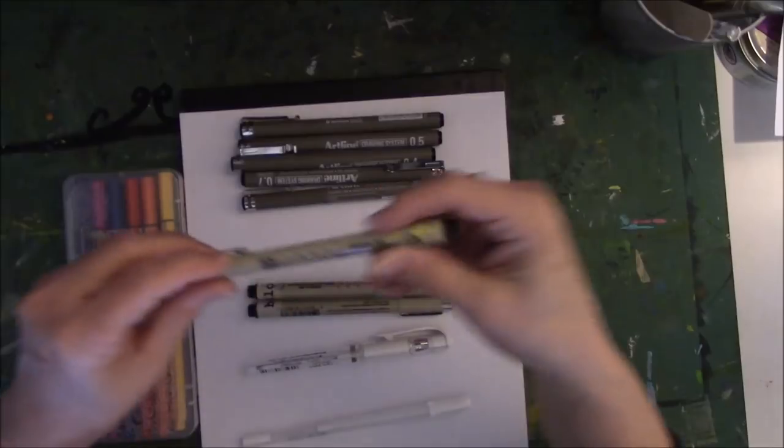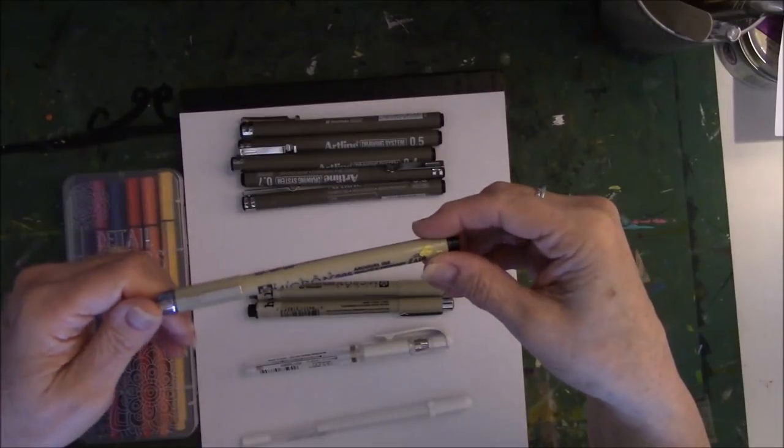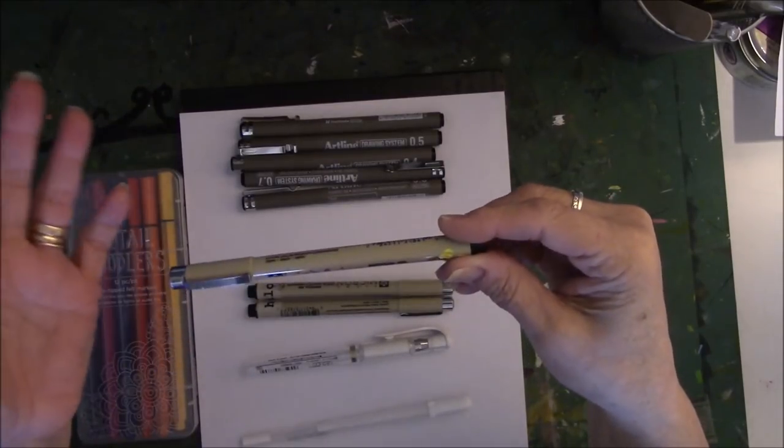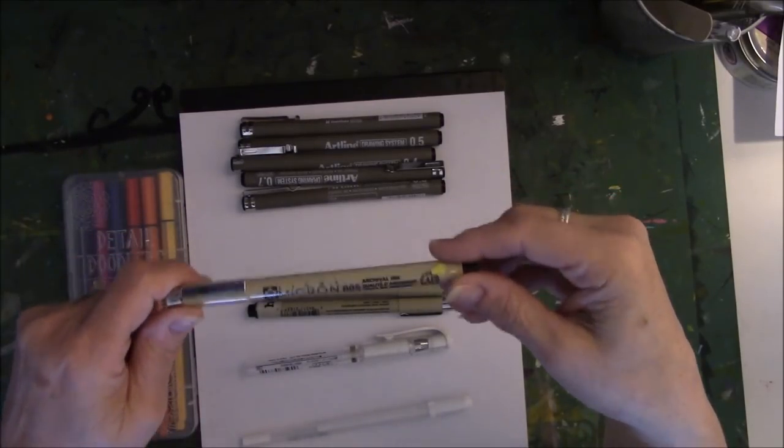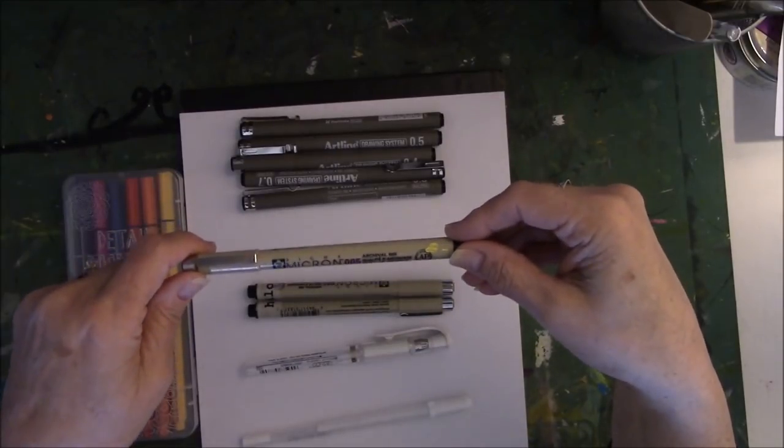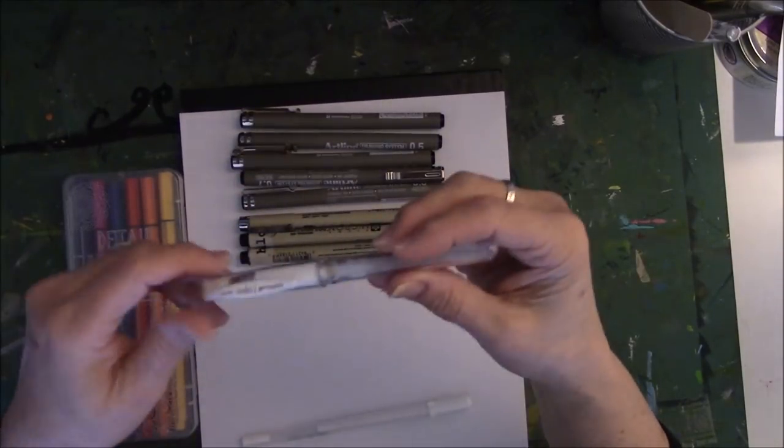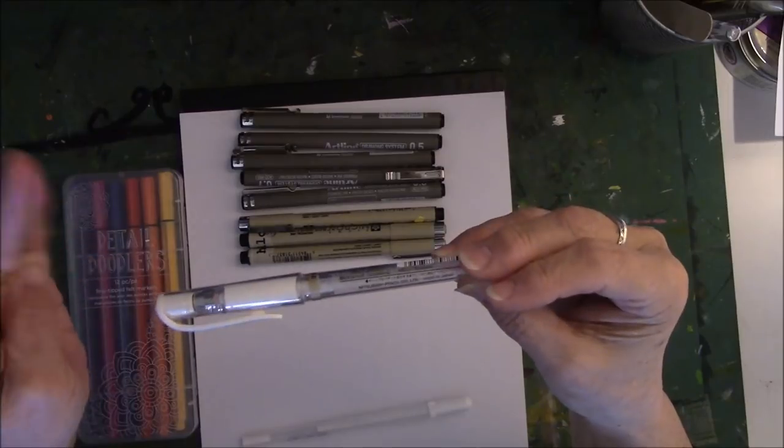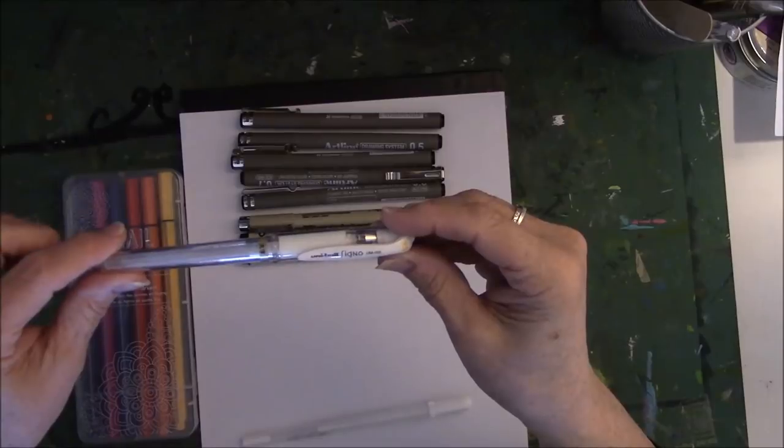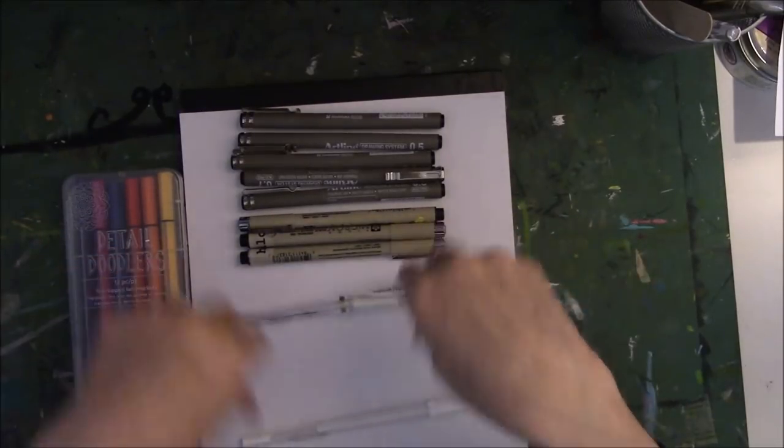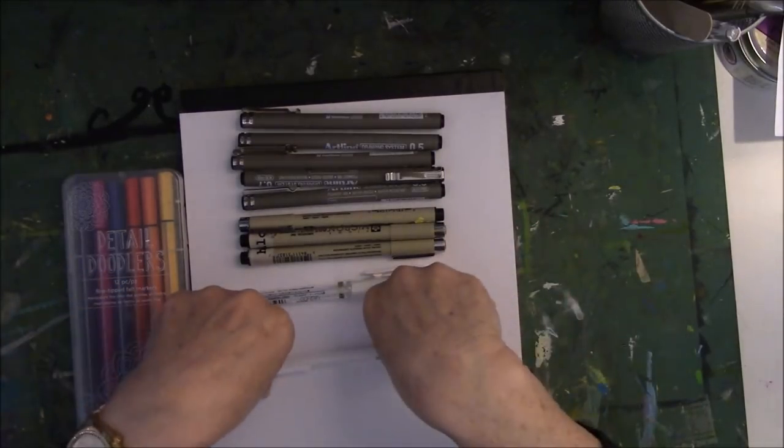The next one is micron pens. Everybody knows about micron pens. They come in lots of different sizes and packs. You can take a coupon, go to Michael's, get 40% off. I suggest that's the way you do it. The next one that I like to use a lot is the Signo pen, the Uniball white Signo. I like using black and white in all kinds of different doodle projects. And then there's the jelly roll pen, the white jelly roll pens.